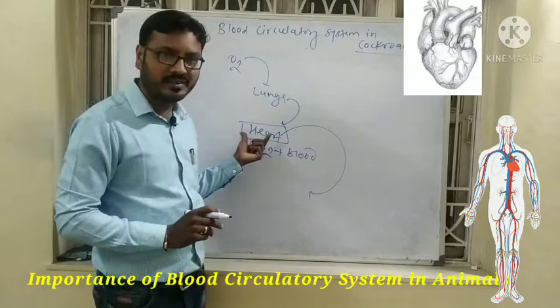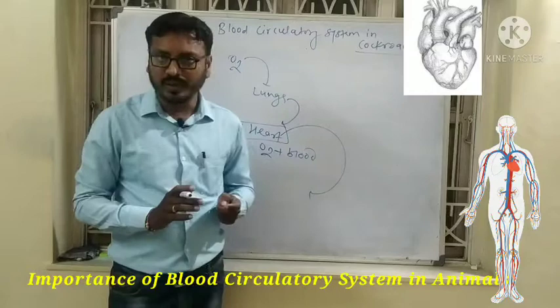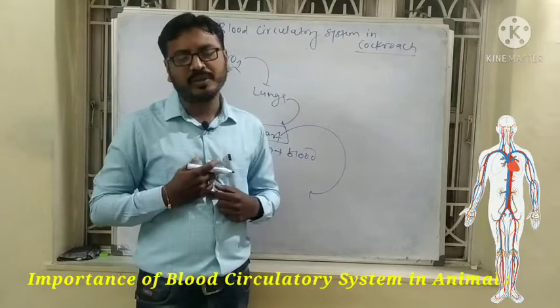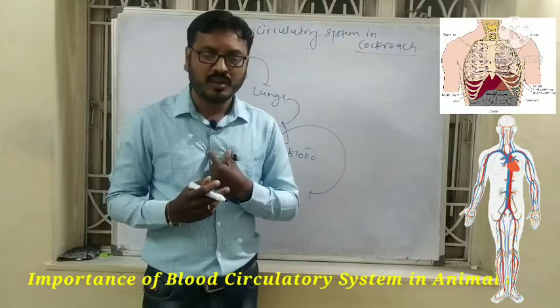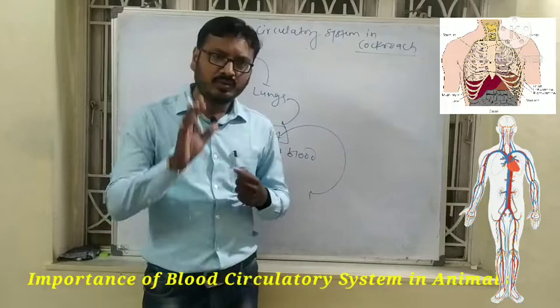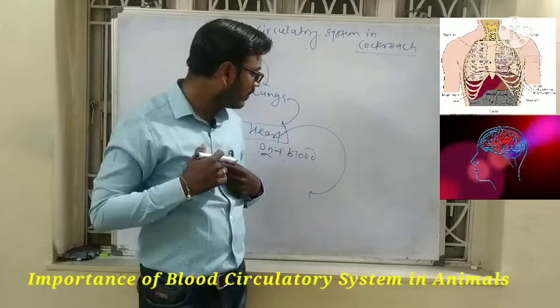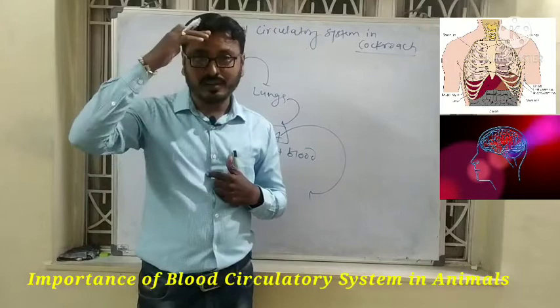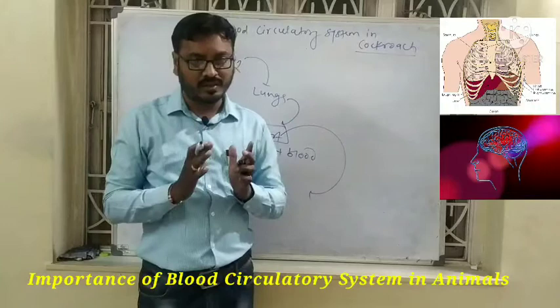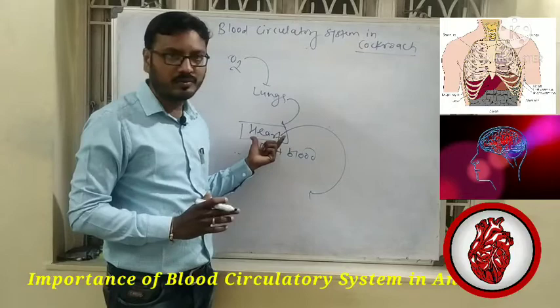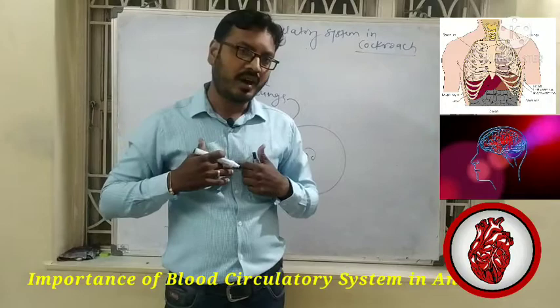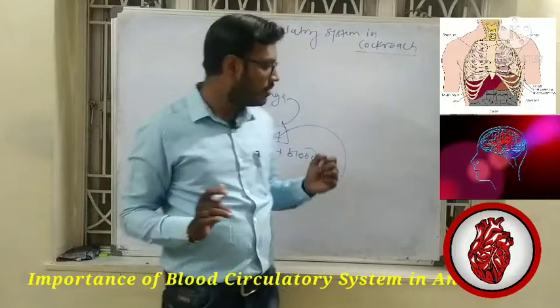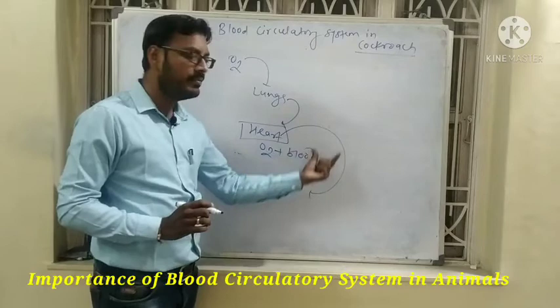This oxygenated blood leads to the different parts of the body. Our heart is present in the thoracic cavity, slightly towards the left side. The nervous system also receives oxygenated blood against gravity, which is possible due to the pumping activity of the heart.